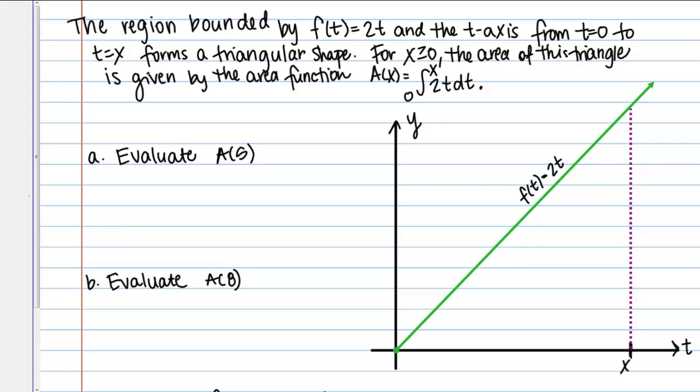For x ≥ 0, the area of this triangle is given by the area function A(x) = the integral from 0 to x of 2t dt.